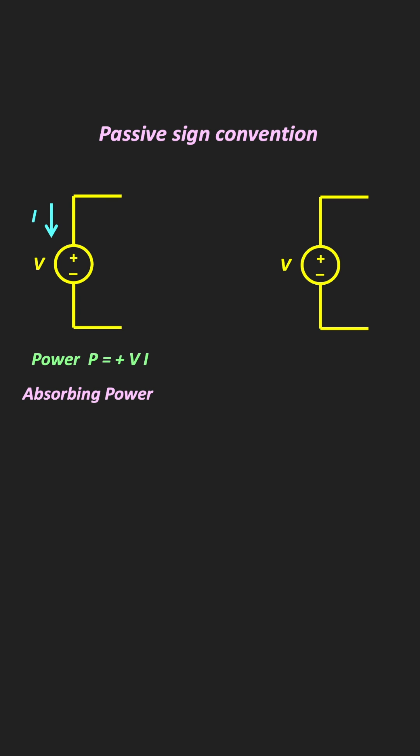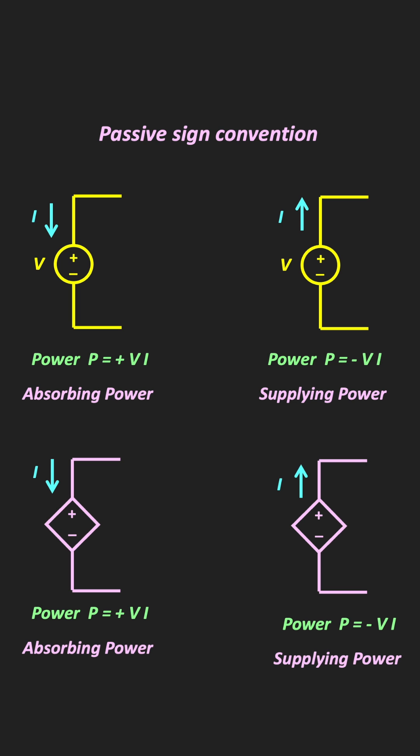On the other hand, when the current is leaving the positive terminal of the voltage, then the power is negative and the element is supplying the power. So in the first case the voltage source is absorbing the power, while in the second case it is supplying the power. The same is also true for dependent sources and other elements.